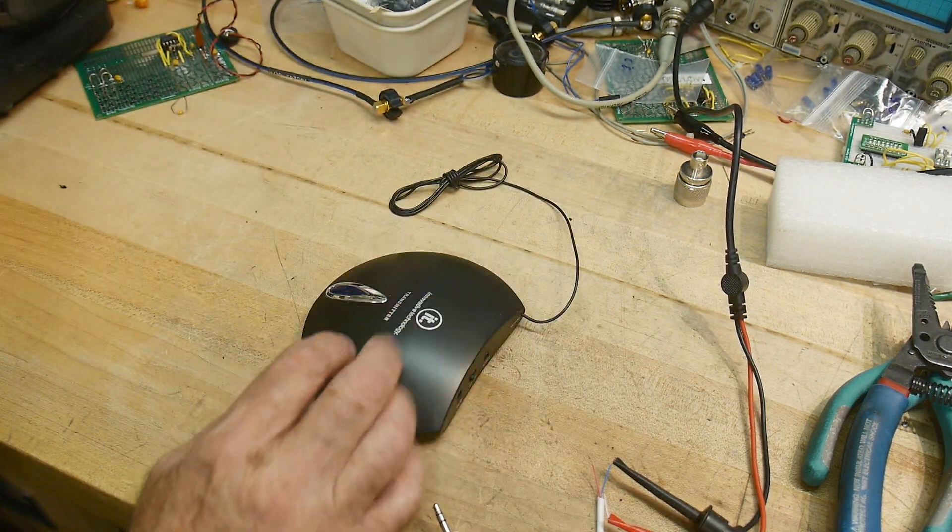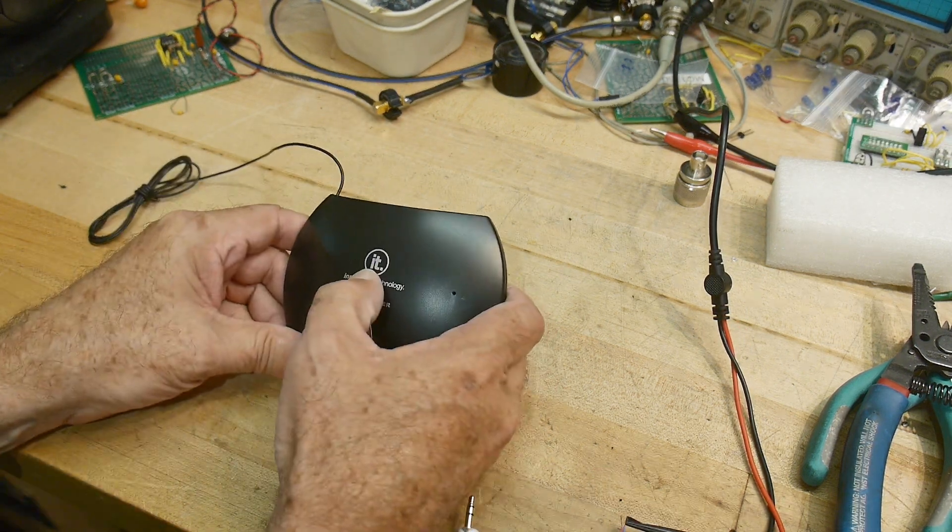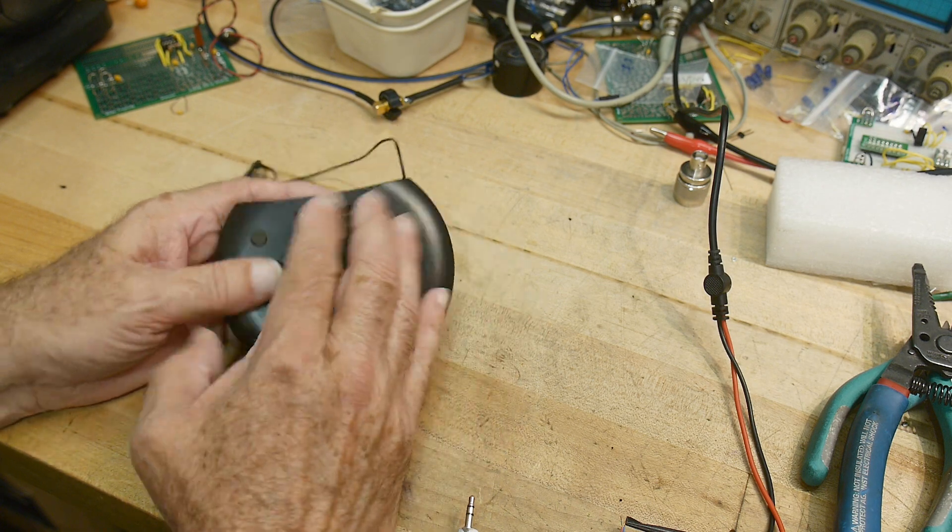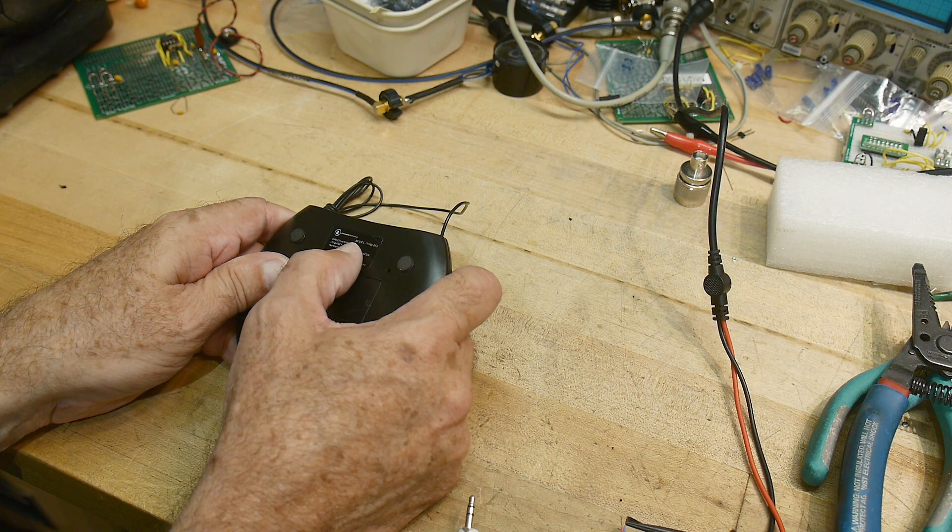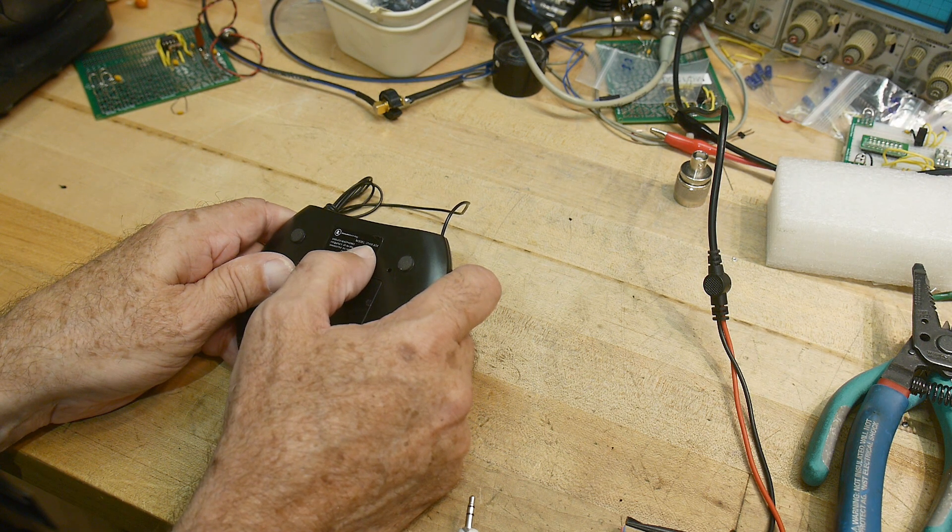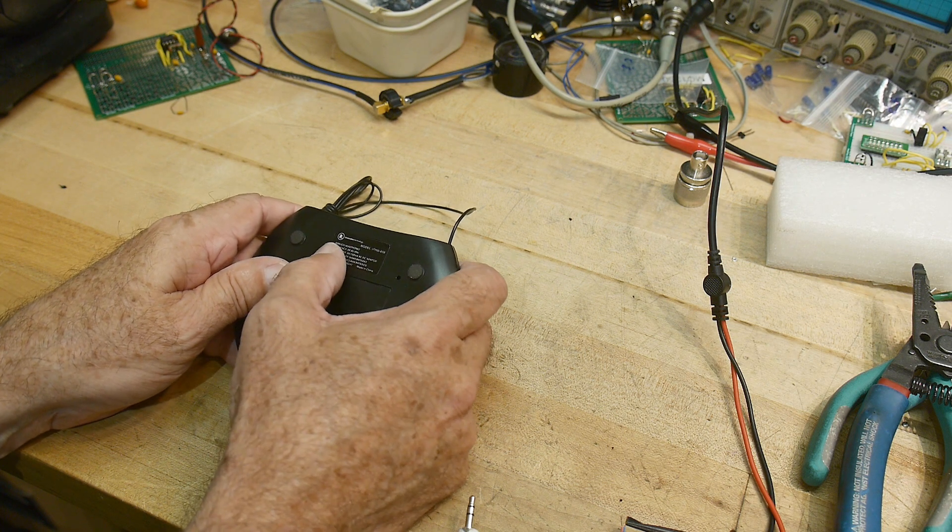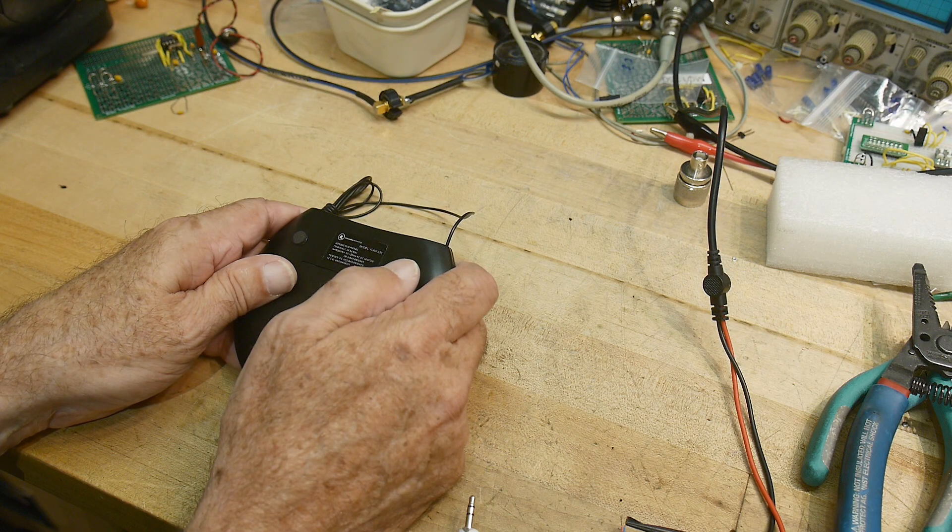And so we'll start with the transmitter side here. It says it's IT, Innovative Technology, the IT Corporation. That's pretty funny. Innovative Technology Model ITHW858 Wireless Headphones. Oh, here's the frequency, 49.86 megahertz. Wow.